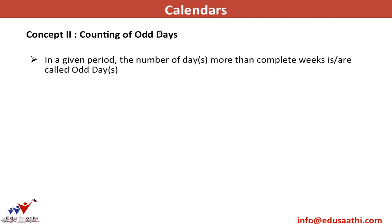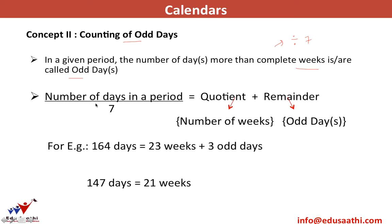The second concept is counting odd days in a given period. Odd days are the number of days more than complete weeks — that is, the remainder when divided by 7. Divide the number of days by 7; the quotient is the number of weeks and the remainder is the odd days. For example, 164 ÷ 7 = 23 remainder 3, so 3 odd days. And 147 ÷ 7 = 21 with 0 odd days.